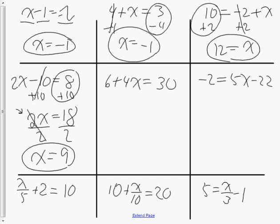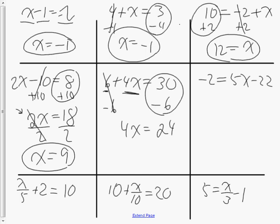In the fifth question, the constant comes first and the variable-coefficient second, but it doesn't matter. My constant is 6 and my coefficient is 4. The first thing I'm going to do is subtract 6 from both sides to get rid of the constant. I'm left with 4x equals 30 positives and 6 negatives — that's 24 positives. Now I've gone from a two-step equation to one step. I divide both sides by 4: 24 divided by 4 is 6. So x equals 6.